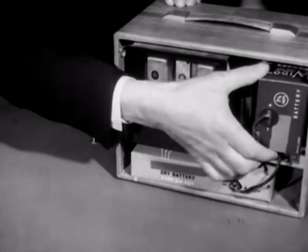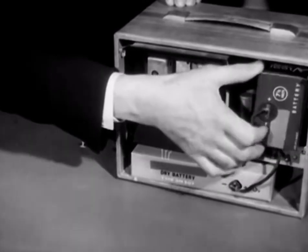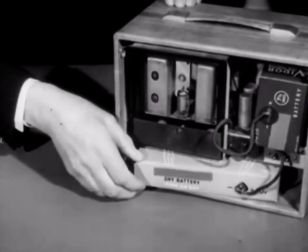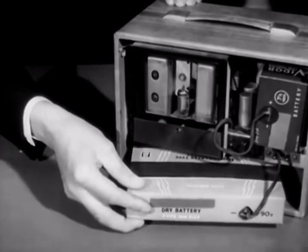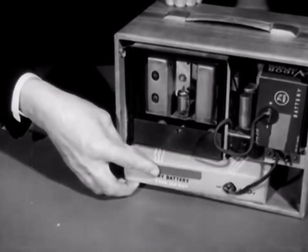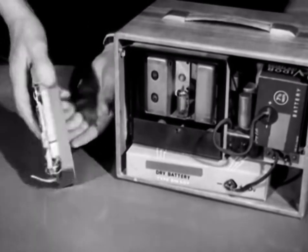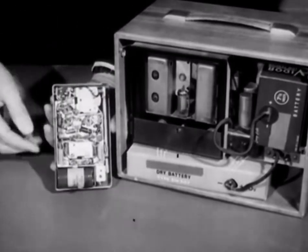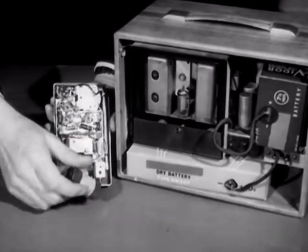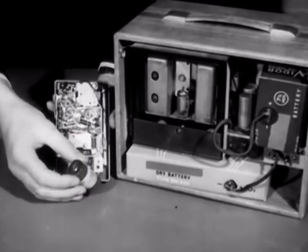This portable valve radio needs this low-tension battery and this high-tension battery to operate it. In the transistor radio here, this small, low-voltage battery is all that is required to operate the receiver for an equivalent time.